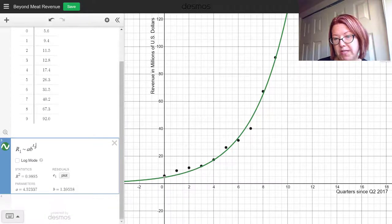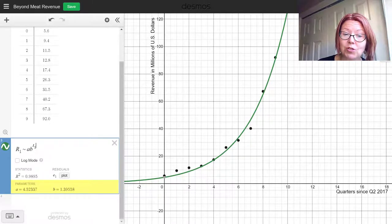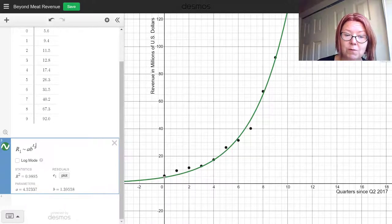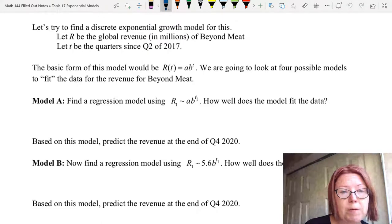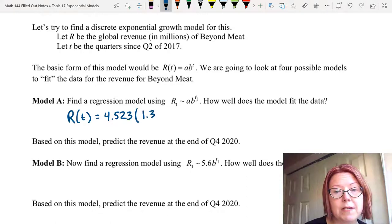It does go through some of the data points somewhere around the model that we have. And this gives us parameters of lowercase a equals 4.52337 and lowercase b equals 1.39558. I'm going to round both of those to three decimal places. So the initial value would be 4.523 and the growth factor would be 1.396. Let's go ahead and write down that information. So our model is capital R of t equals 4.523 left paren 1.396 right paren raised to the t. So that's our model.